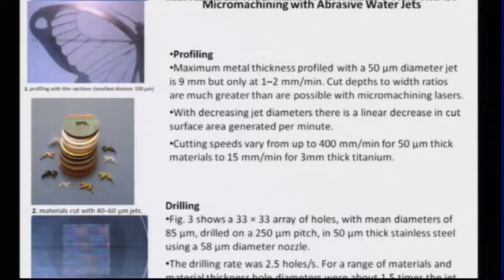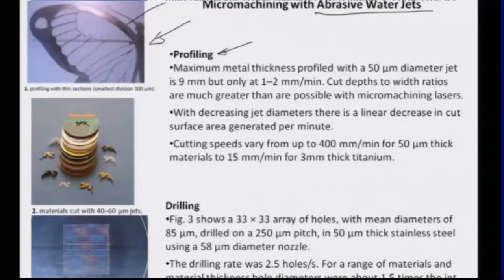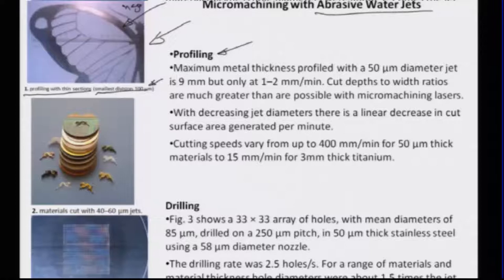Let us look at some very nice images reported by Miller et al in 2004 about the capabilities of AJM and how small machining can go using abrasive water jets. There are several aspects — for example, you can see profiling: a section of a butterfly wing very nicely carved out by abrasive water jet machining, where the smallest division of such a section is about 100 microns. You can really profile very thin sections with a mask that is the exact negative replica of the wing shape.